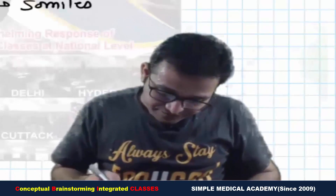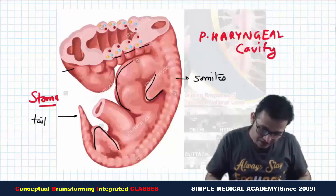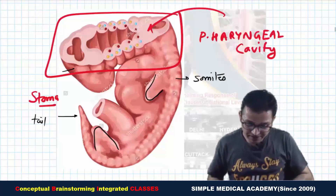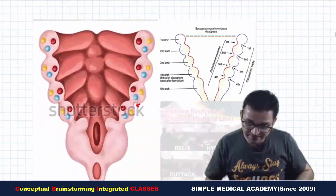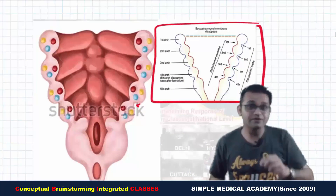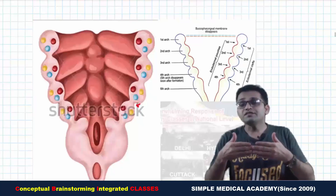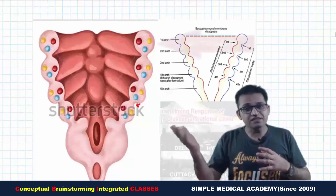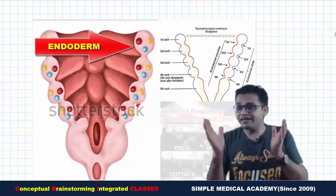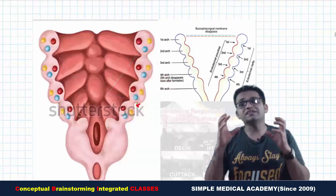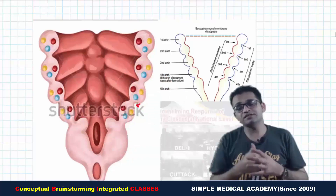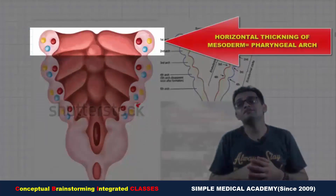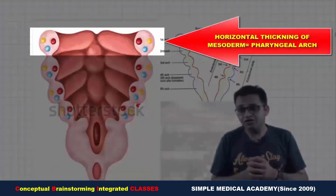Now we are going to look at this diagram from the back side, as it appears in Inderbir Singh's first-year embryology book. In this image, we are looking at the pharyngeal cavity from the back side. The outer lining is ectoderm, the inner lining is endoderm, and the mesoderm lies in between, getting thickened and making six thickenings running as horizontal arch-like structures.